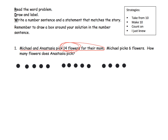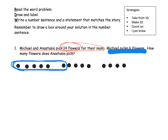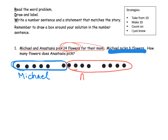Now it says Michael picks six flowers. So let's count six — that's these five plus one more. I'm going to circle them rather than crossing them off, which is perfectly fine. I'll label this group Michael. That means Anastasia picked the rest — all of these remaining dots are Anastasia's. And the answer is just to count: we've got four here plus four here, so the answer is eight.